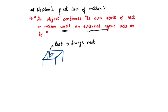Unless an external agent acts on it, it's always going to be at rest. The pencil or the pen is not going to move by itself. This is at rest, it's always going to be at rest. Obviously, if an external agent — let's say like you — tries to move this pen, then it will move. But Newton's talking about when there is no external agent. Until and unless an external agent acts on it, this pen will always stay at rest.